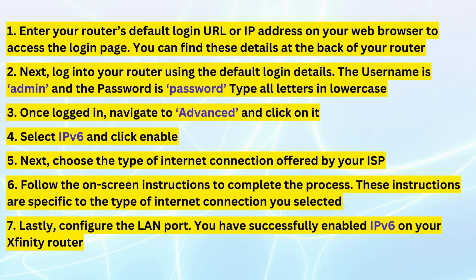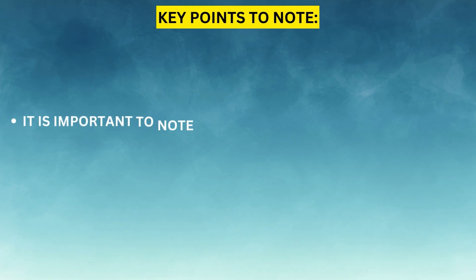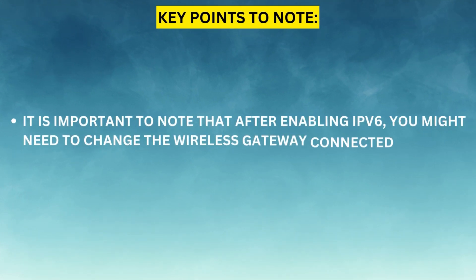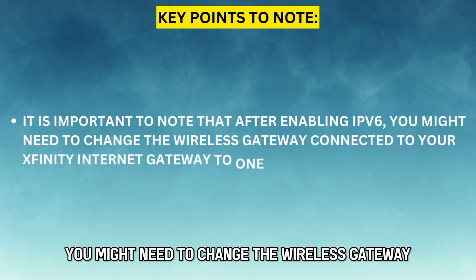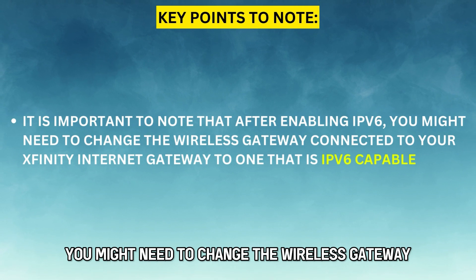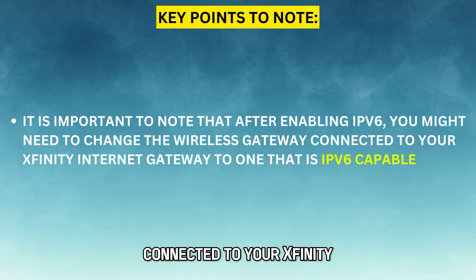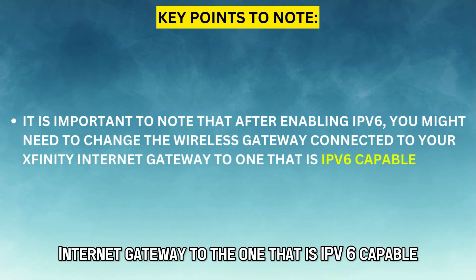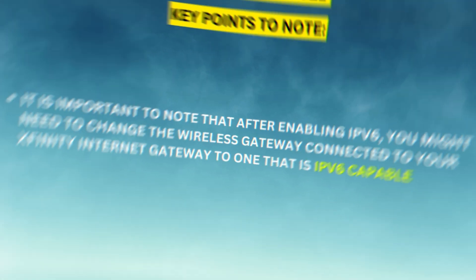Lastly, configure the LAN port. You've successfully enabled IPv6 on your Xfinity router. It's important to note that after enabling IPv6, you might need to change the wireless gateway connected to your Xfinity internet gateway to one that is IPv6 capable.